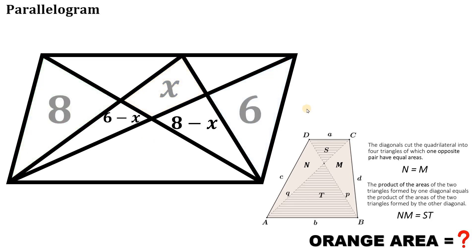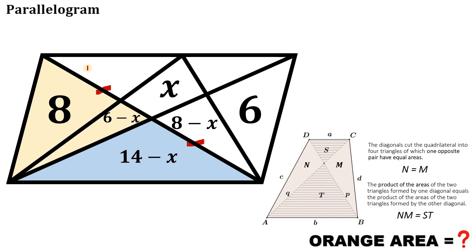First, I'll show you two triangles having the same area — the reason is they share the same base and the same height. So the area of the bottom triangle must equal 8 plus 6 minus x, which is simply 14 minus x. The top triangle also equals 14 minus x, but we don't yet have the value of a certain region, so let's call it y.